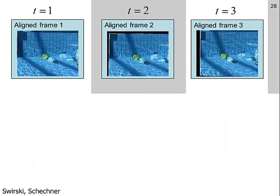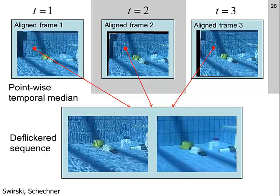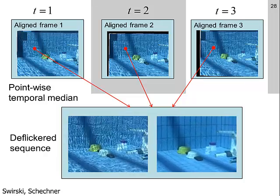Now we have static stereo sequences. The first use of the stabilized sequences is to refine the range map using multi-frame stereo. We exploit the spatiotemporal variations of flicker to achieve much more accurate and robust range information. These maps can be used to refine the model point cloud and achieve more accurate 3D reconstruction. We can also apply pointwise temporal median on every point in the stabilized video to de-flicker the images, as seen in this video.